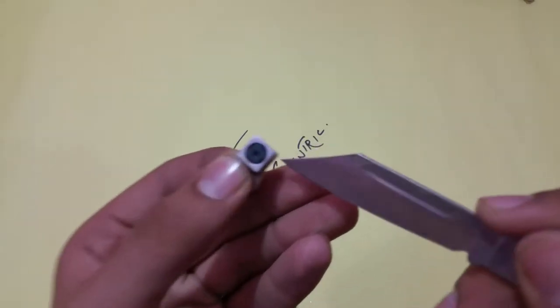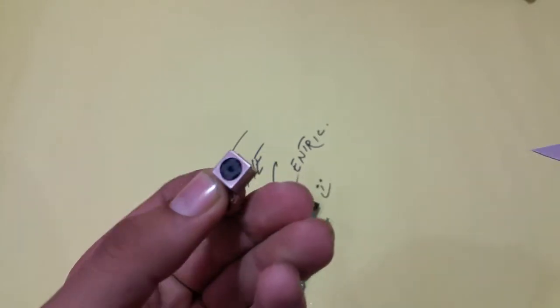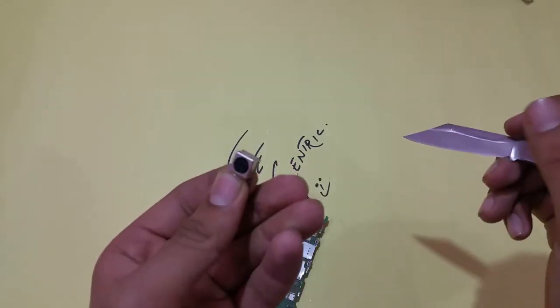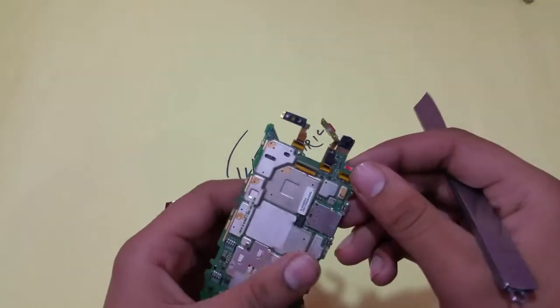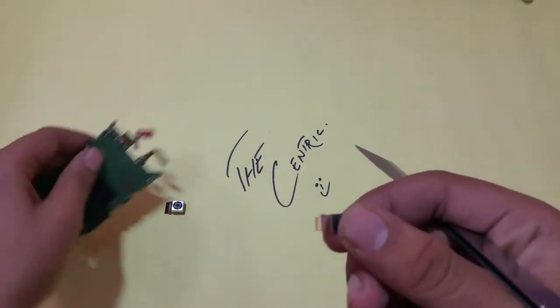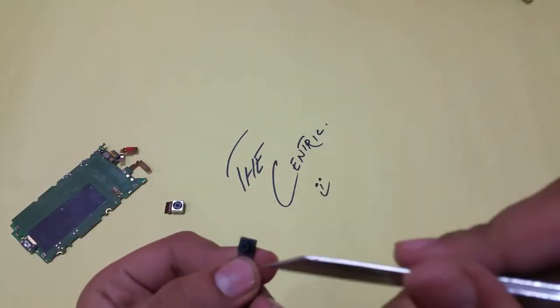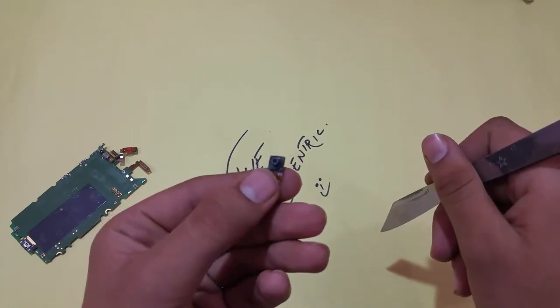As you can see, this camera does not support optical image stabilization. Now it's time to put it aside and remove the other camera so you can see both lenses. This camera also does not support optical image stabilization.